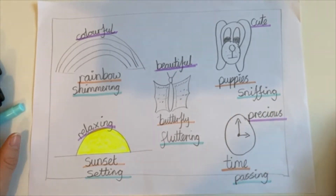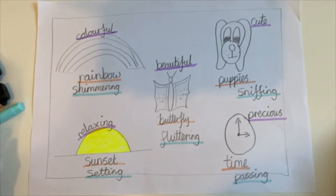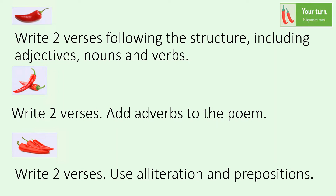If you don't have your plan from yesterday, don't worry - after I've explained all the chillies, I'm going to put a picture of this plan on screen for you to use. Here are the chilli challenges for today's poetry writing. For chilli one, you'll write two verses following the structure I give you, including your adjectives, nouns, and verbs - these are already on your plan. For chilli two, you'll write two verses following the structure and try to add some adverbs to your poem. For chilli three, you'll write two verses and try to use alliteration and prepositions within your poem.